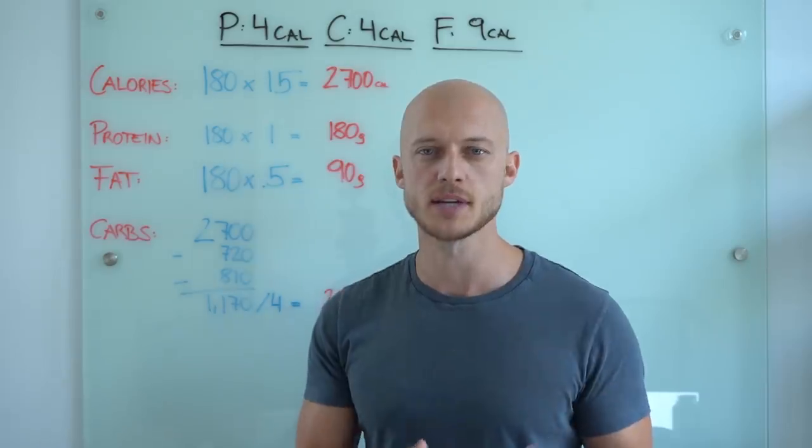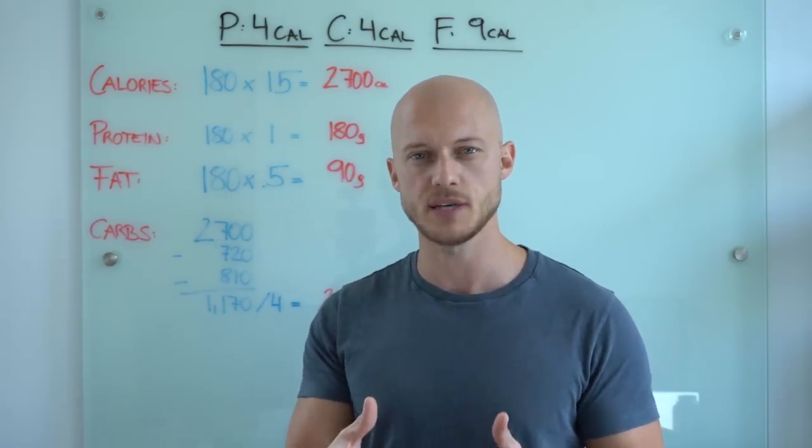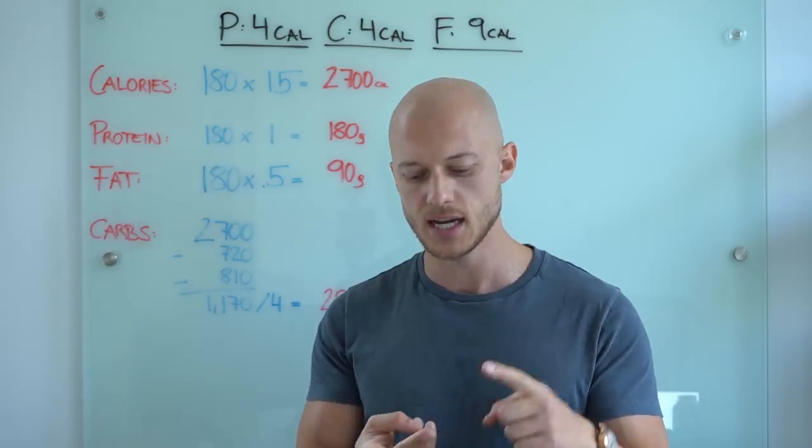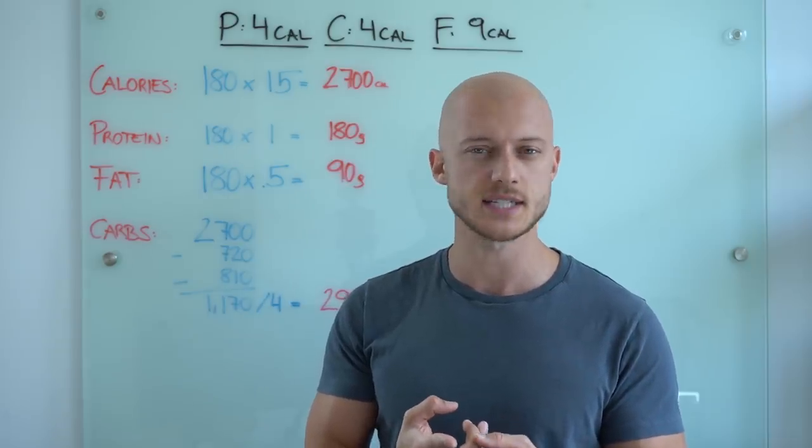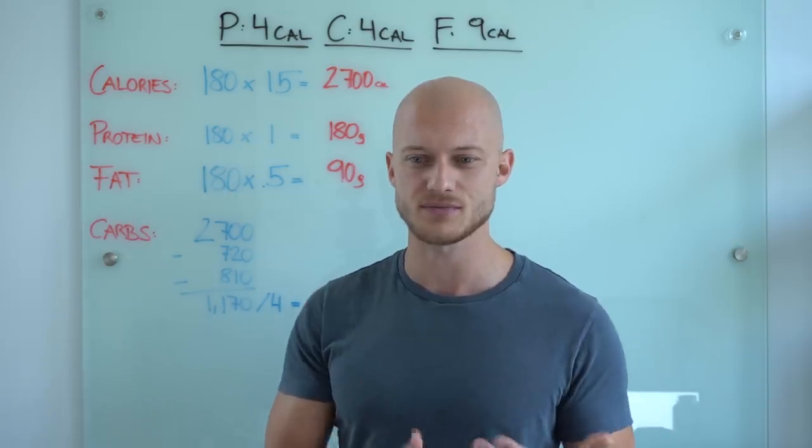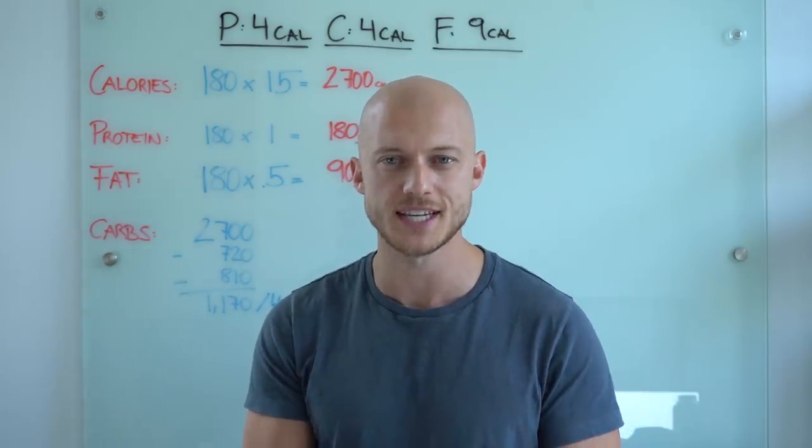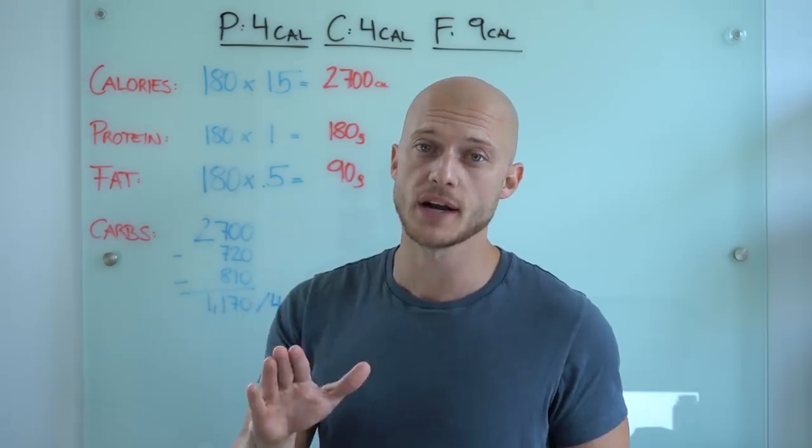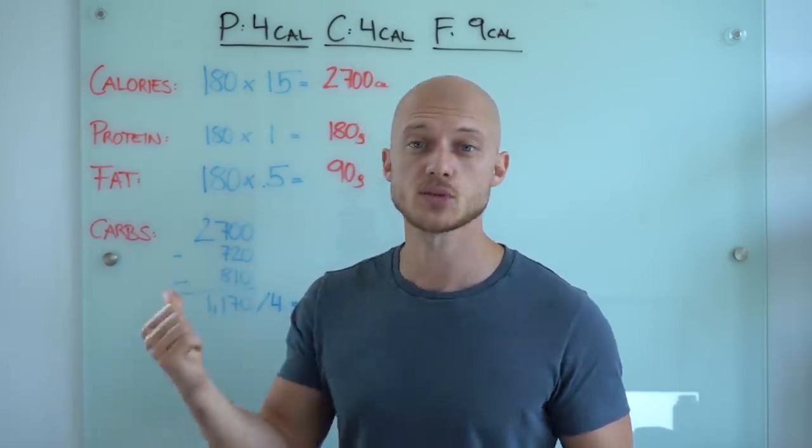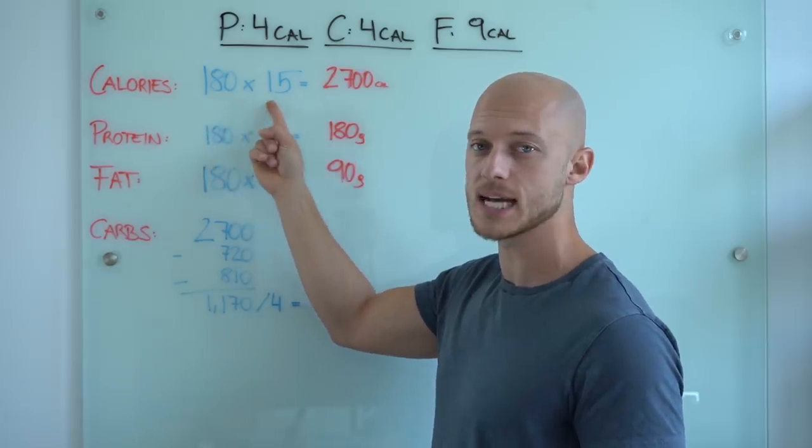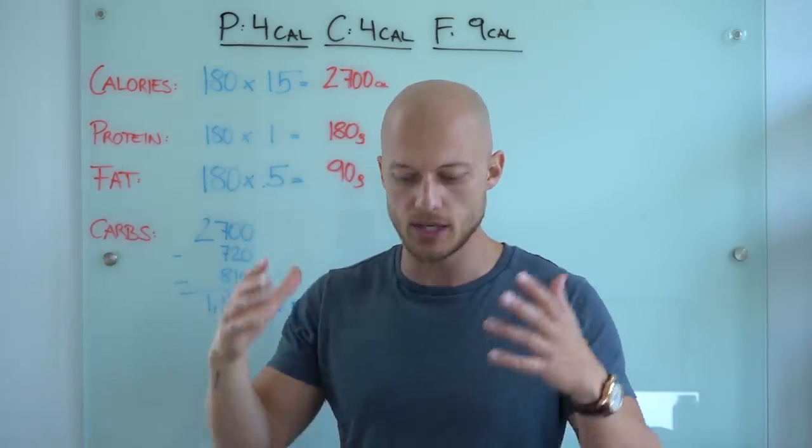So let's start with how many calories do I need on a daily basis. The formula is body weight times 13 to 16. I personally put myself at a 15 because I do personal training, so I move a lot throughout the entire day. If you work at an office and sit at a desk all day, you might want to put yourself lower at like 13 to 14. For me, I weigh 180 pounds times 15 equals 2700 calories. That's what I need on a daily basis to keep my muscle mass.